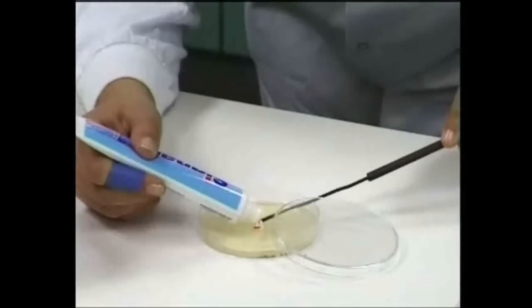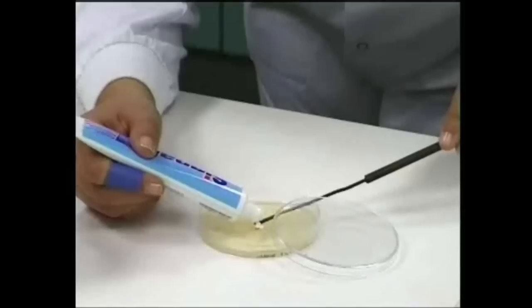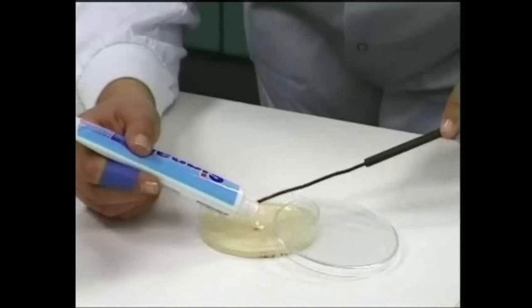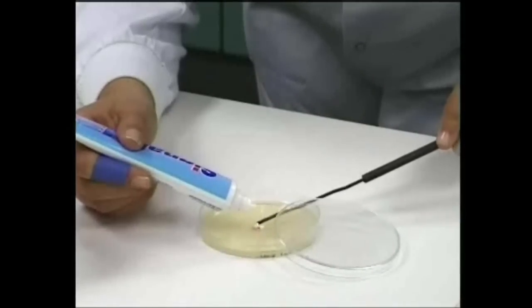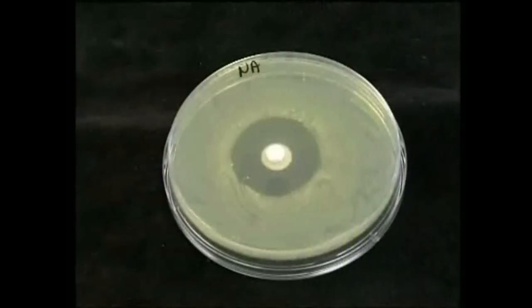If the reagent to be tested is solid, it can simply be placed in the middle of the plate. If liquids are to be tested, wells must be cut into the medium and the contaminated agar plugs that are removed need to be disposed of appropriately.